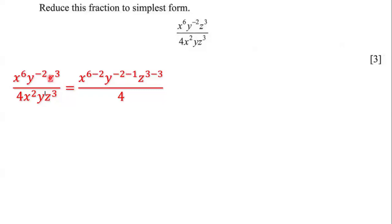The same thing is true for the z's. We have z to the power of 3 and we have z to the power of 3. We have two terms that have the same base, and we're dividing them, so we're going to subtract the powers. So it's z to the power of 3 minus 3. And we keep the 4 at the bottom.